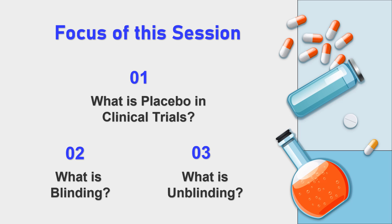In this particular session, we are going to look at three important things. First, we will understand what exactly is placebo when it comes to clinical trials. Secondly, we will understand what is blinding in clinical trials, followed by what is unblinding in clinical trials.